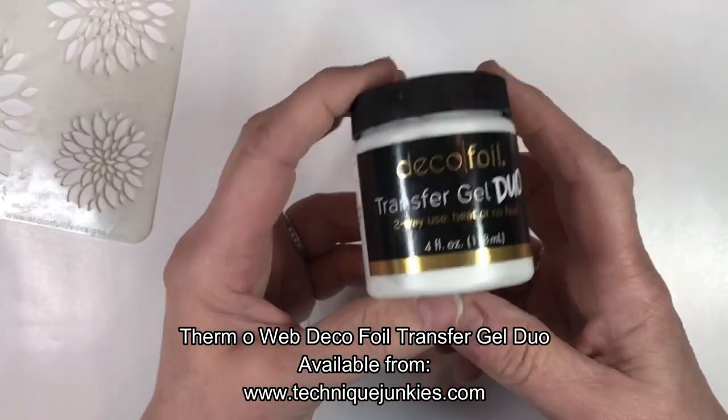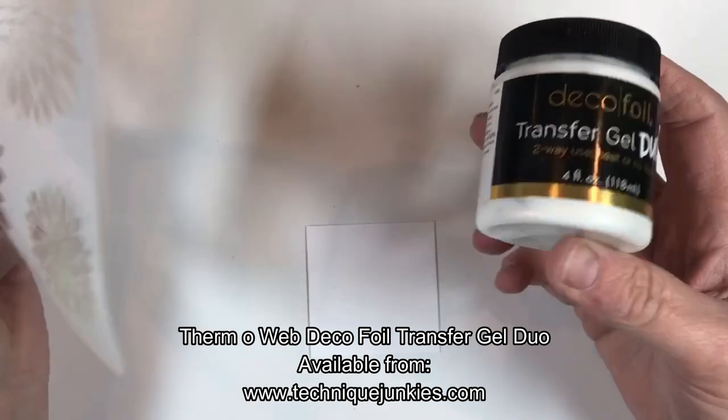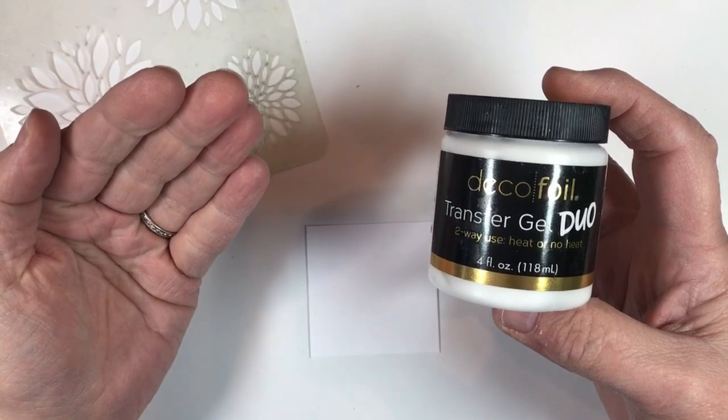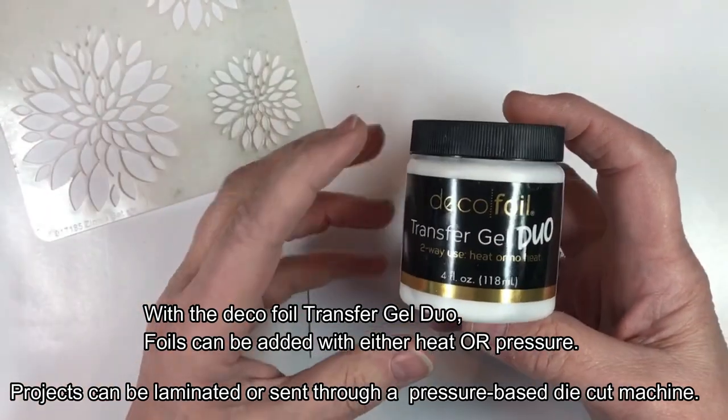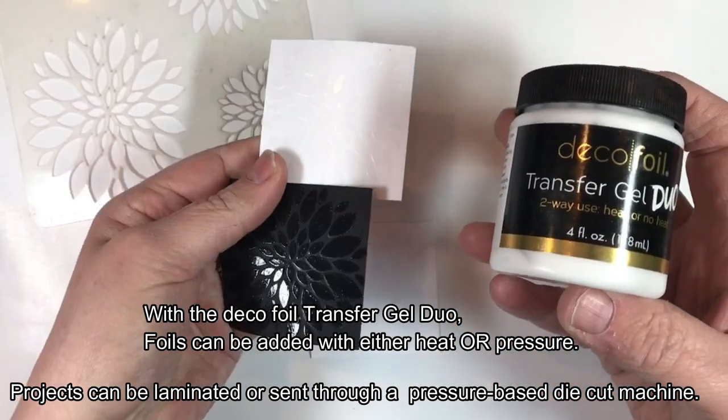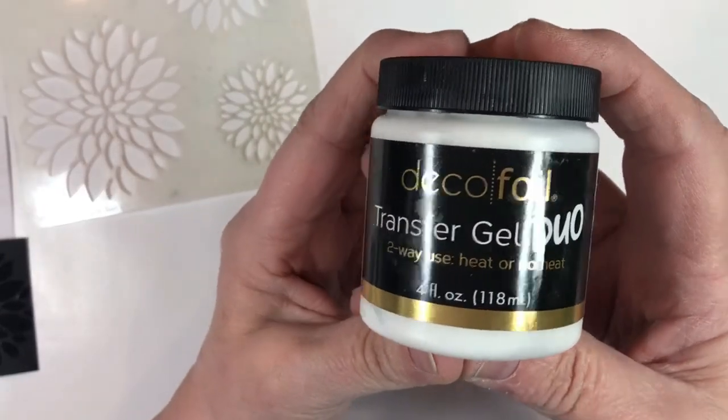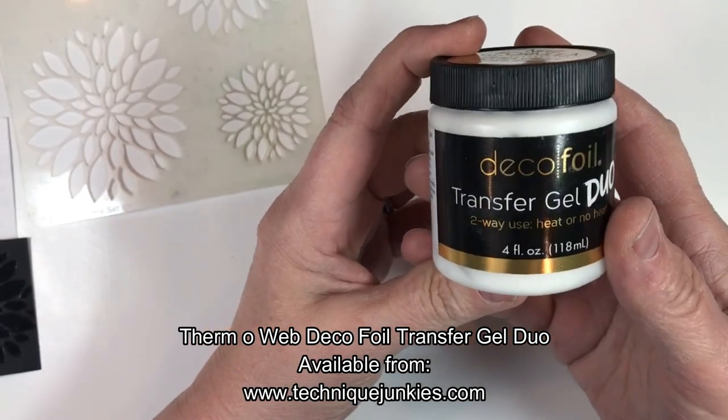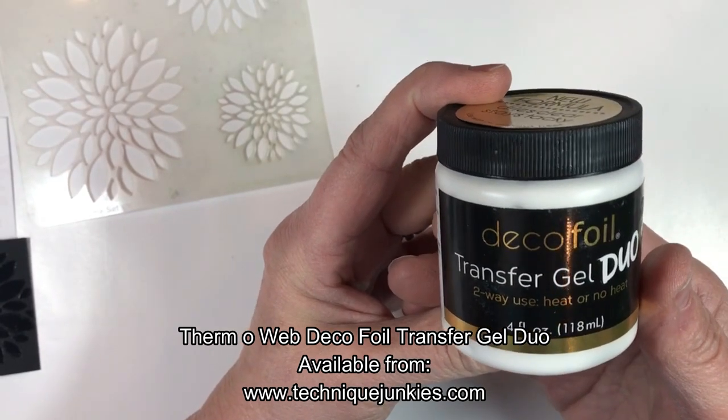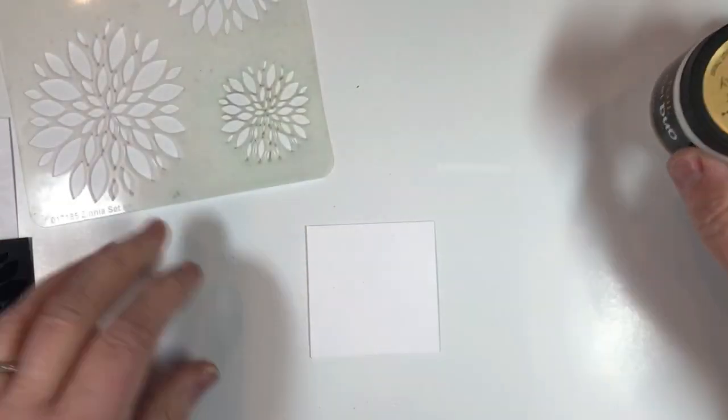So for the technique part of this, I mentioned that we can use stencils and a transfer gel, and actually use either a laminator or just use a regular Big Shot. This is made by ThermoWeb, it's deco foil transfer gel duo, and the duo part of it is two-way use, heat or no heat. So this is kind of revolutionary in that you don't have to have a laminator in order to use foil.